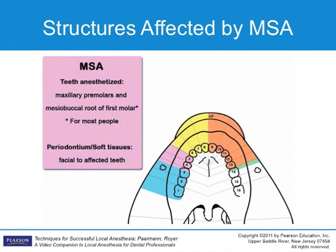Be reminded that the MSA nerve is absent in a large percentage of the population. Exact numbers are not known, but estimates of its absence range from 28 to 72 percent among authors. Because it is impossible for clinicians to determine if the MSA is present or absent, they must assume the nerve is present.